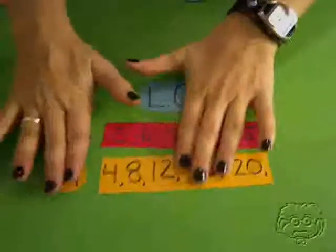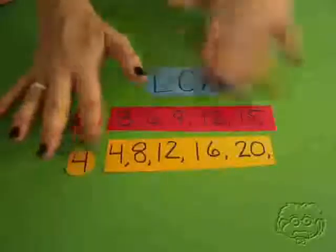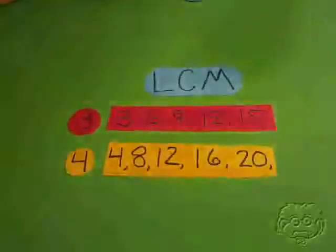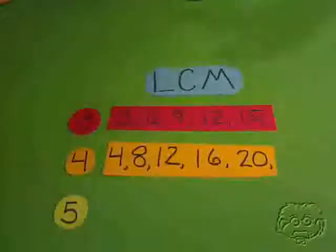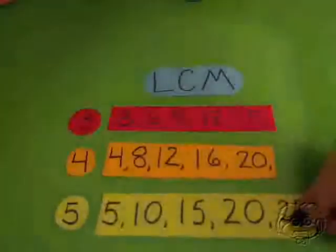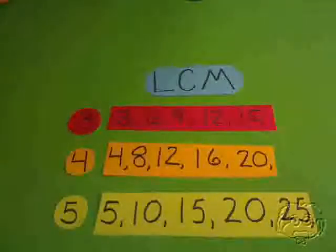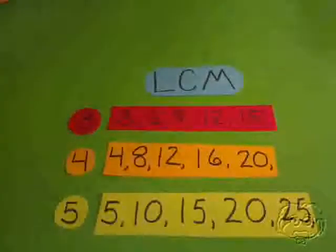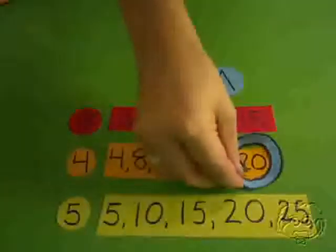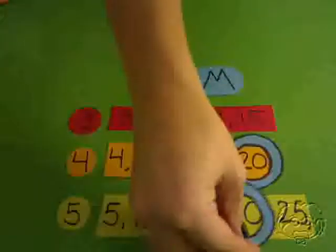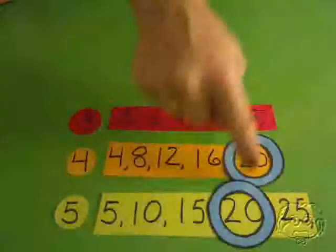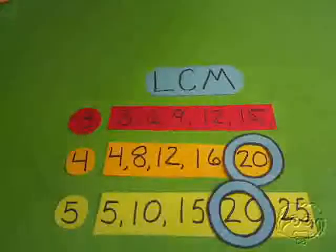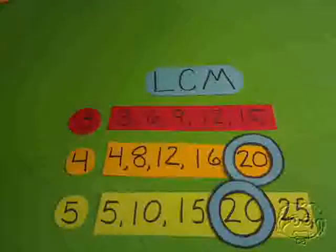What if we wanted to find the least common multiple of 4 and 5? We can go ahead and list the multiples of 5. The first five multiples are 5, 10, 15, 20, and 25. So what's the smallest multiple that's on both the lists for 4 and for 5? 20 is. All these numbers are different from each other, but 20 they both share, so that's the smallest multiple they have in common.